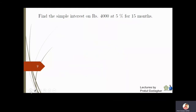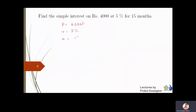We are now supposed to find the simple interest on rupees 4000, so the principal is 4000. The rate is 5 percent, and the time period is 15 months.